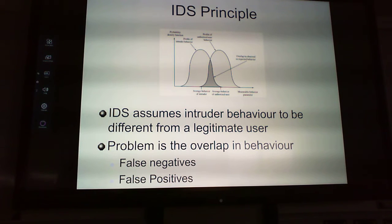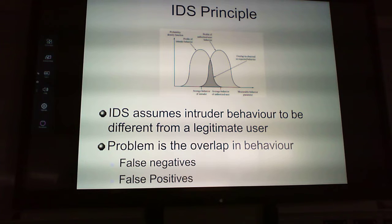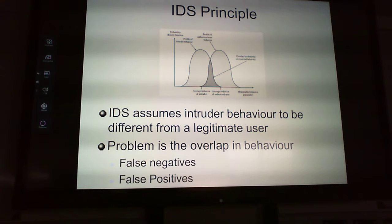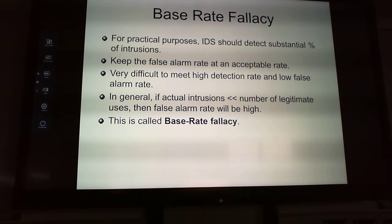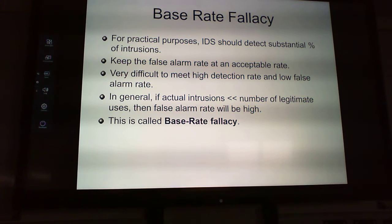The IDS principle assumes that intruder behavior differs from that of a legitimate user. The problem is overlapping behavior, so we get false negatives and false positives. That intersection is where a user acting normally may fall within what the IDS considers unauthorized behavior — that does happen. This is called the base rate fallacy.